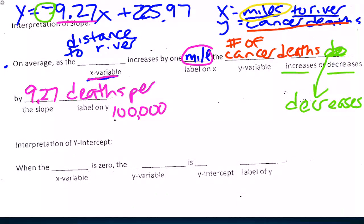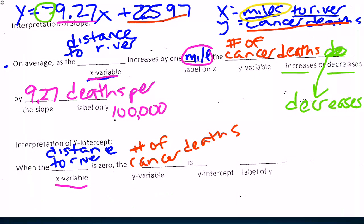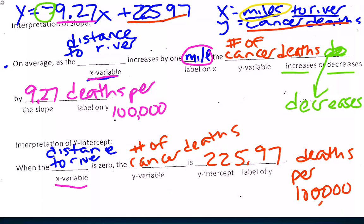If I want to interpret the y intercept, it's when my x variable, once again, is distance to the river. When my distance to the river is zero, what is my y variable? Number of cancer deaths. The number of cancer deaths is, what's my y intercept? 225.97 deaths, my label, deaths per 100,000.